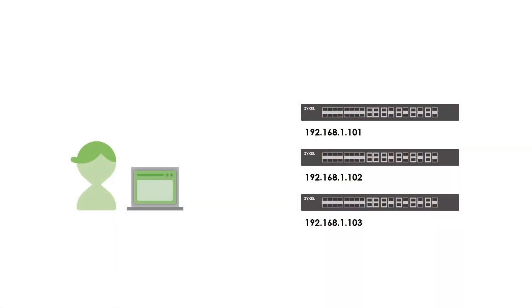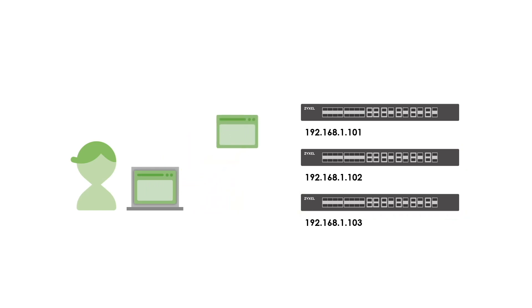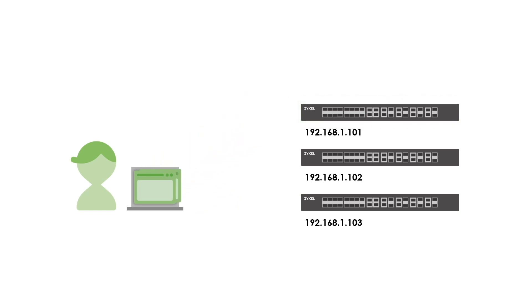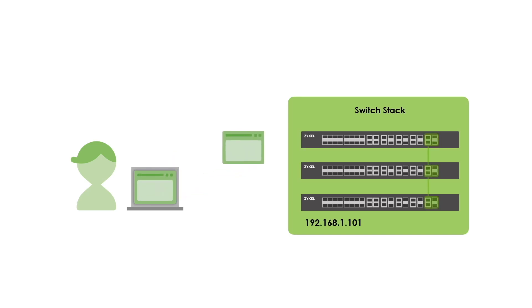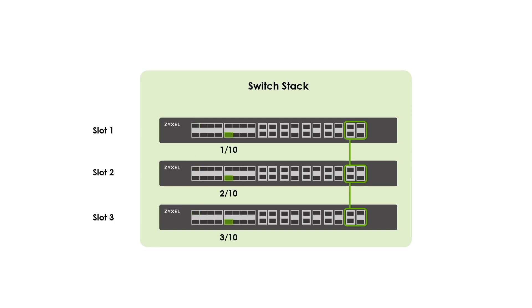Most administrators manage devices by accessing the device web GUI using a common internet browser. Without stacking, the network administrator will need to enter the IP address of each device, enter the login name and password, and then start applying your network settings on different pages of each switch unit. Compare this with stacking — the administrator only needs to enter a single IP address to access the entire switch stack. Each switch unit in the stack is referred to as a slot, and we can identify each port on the stack by a combination of their slot and port number.